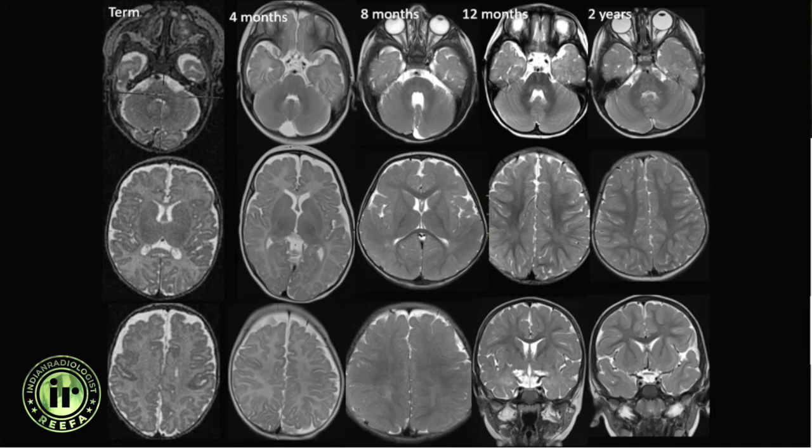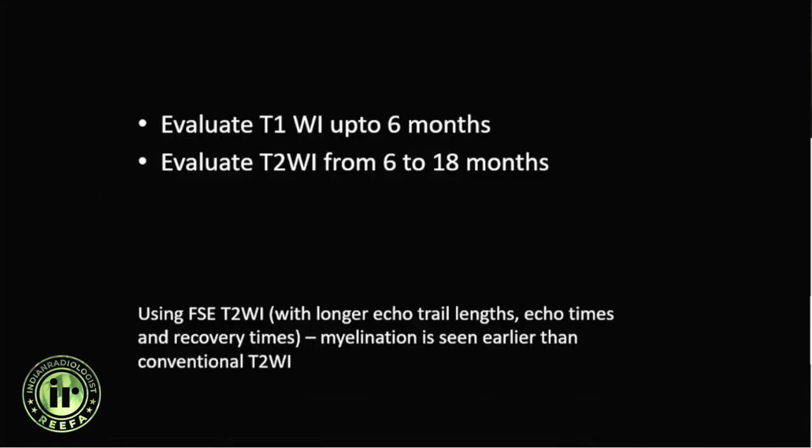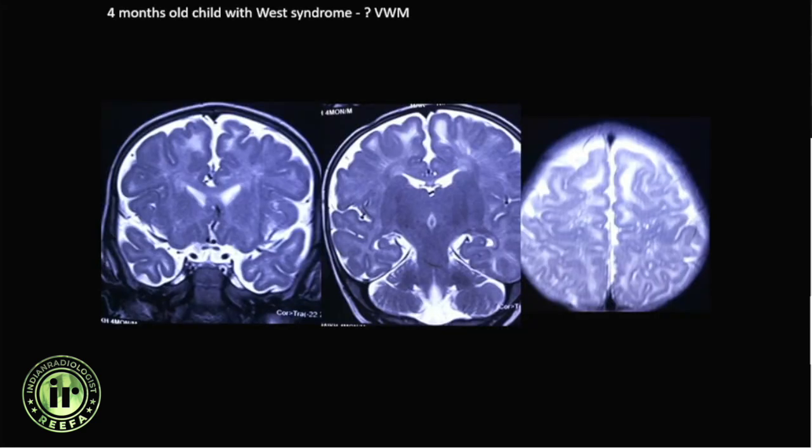Myelination progresses in the frontal and temporal subcortical U-fibers last — the temporal subcortical U-fibers are the last parts of the brain to myelinate. In the earlier stages of life we evaluate T1-weighted images, and after around six months to one and a half years myelination is evaluated on T2-weighted images.